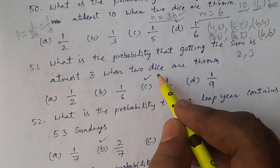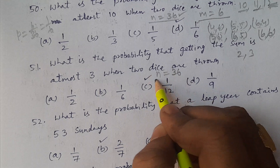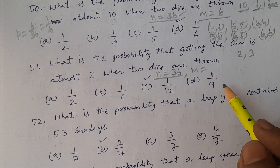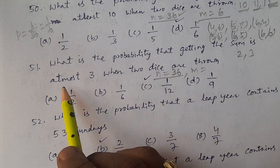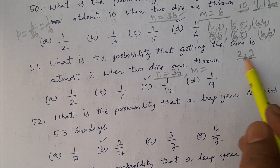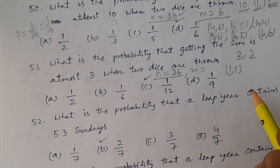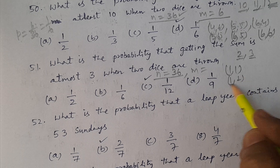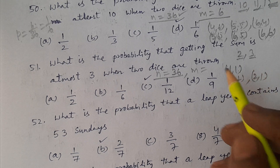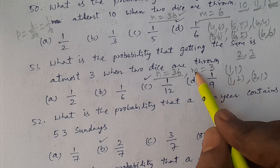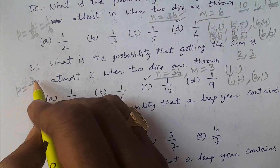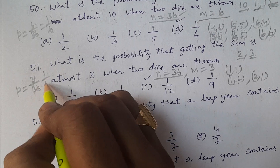Total outcomes n = 36. For sum 2, the only outcome is (1,1). For sum 3, the outcomes are (1,2) and (2,1). So favorable outcomes m = 3. The probability P = m/n = 3/36 = 1/12.